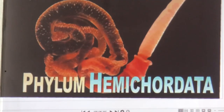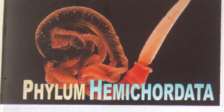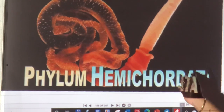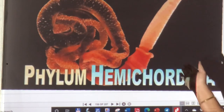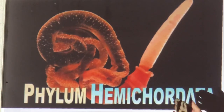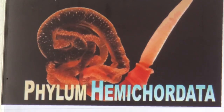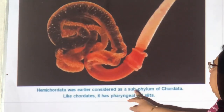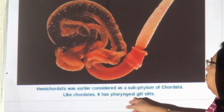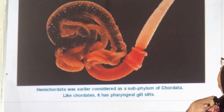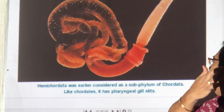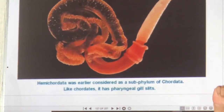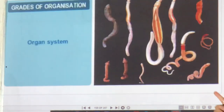Now we come to Phylum Hemichordata — half-chordates. Hemi means half, like hemisphere. It shows some properties of chordates and some of non-chordates — it is a connecting link. Hemichordata was earlier put under Chordata because it has pharyngeal gill slits. You also have gill slits — your ear canal and tonsils are gill slits. They are organ system level, bilaterally symmetrical, triploblastic with three germ layers.